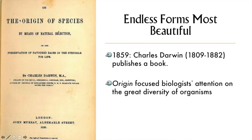In 1859, while Mendel was sowing pea plants in Bernot, Charles Darwin celebrated his 50th birthday and also published a book — not his first one. He was a known author since writing his travelogue, Voyage of the Beagle. His 1859 book was titled On the Origin of Species by Means of Natural Selection, or the Preservation of Favored Races in the Struggle for Life. For the rest of this lecture, I shall refer to it simply as Origin of Species, or even just Origin.